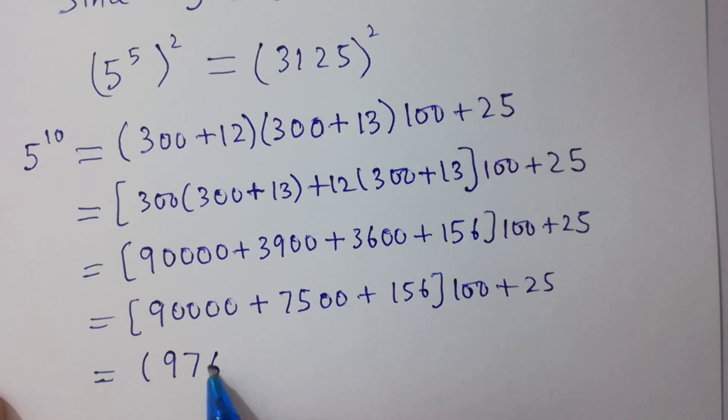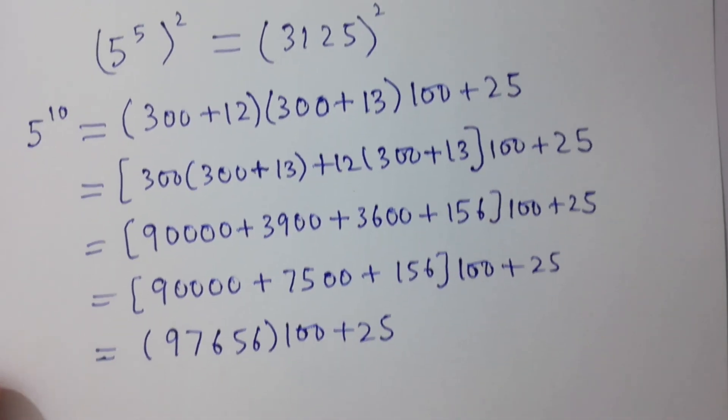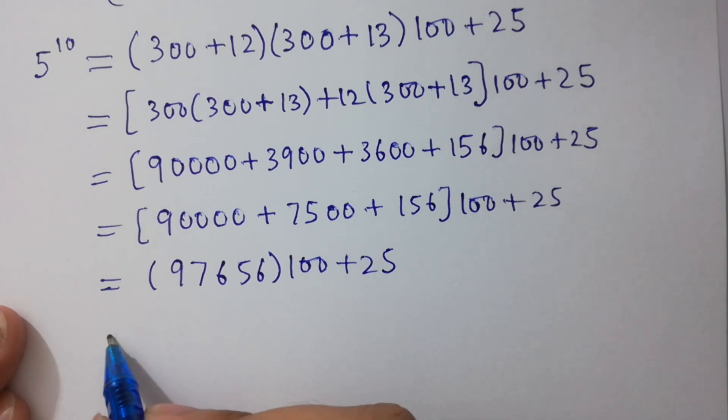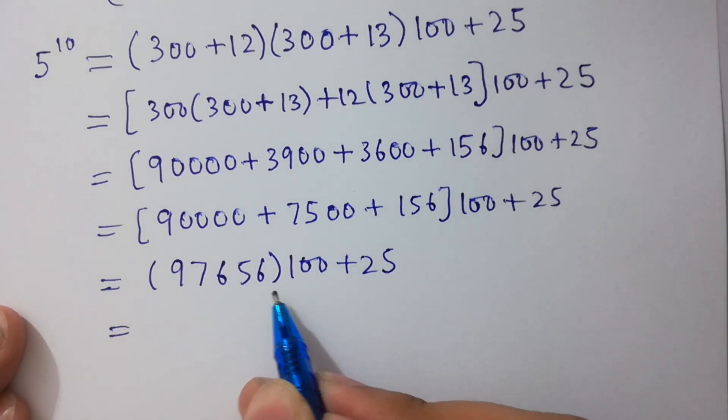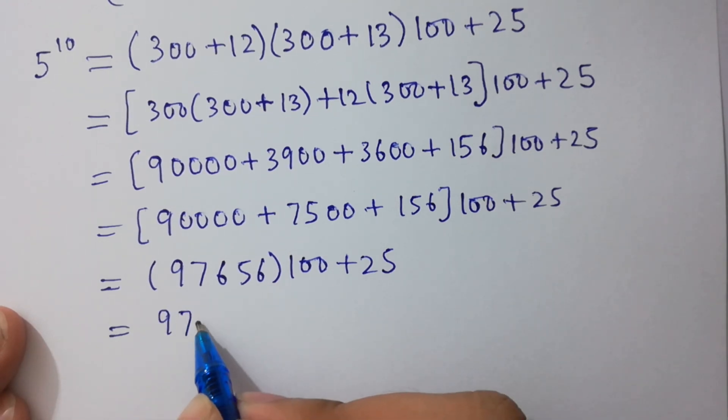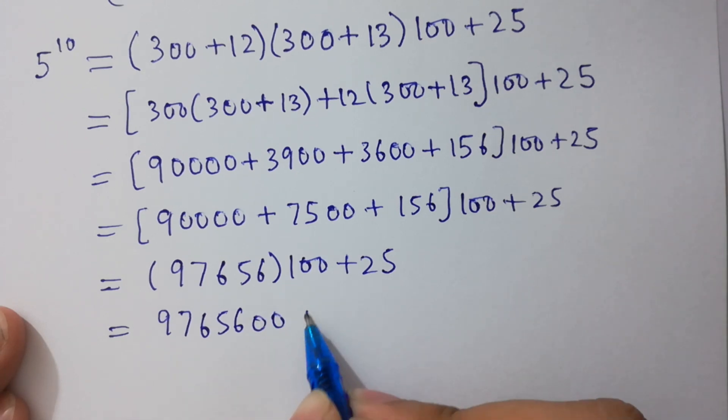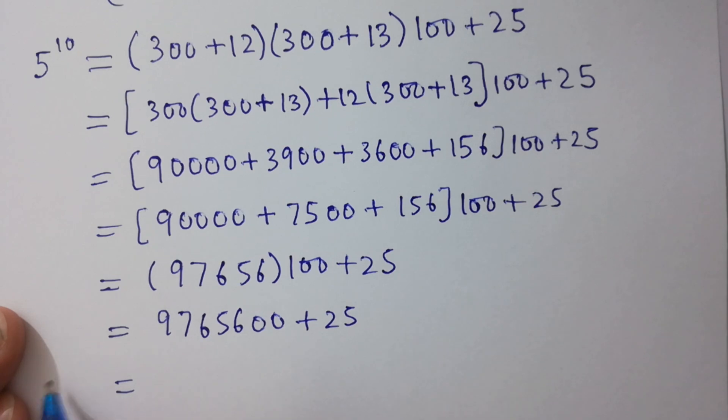97,656 times 100 plus 25 as it is. 97,656 times 100 equals 9,765,600 plus 25.